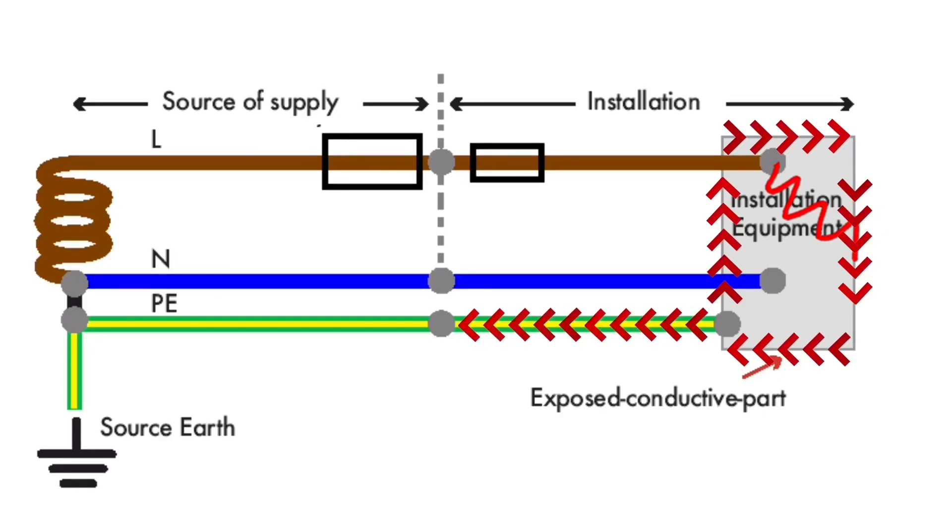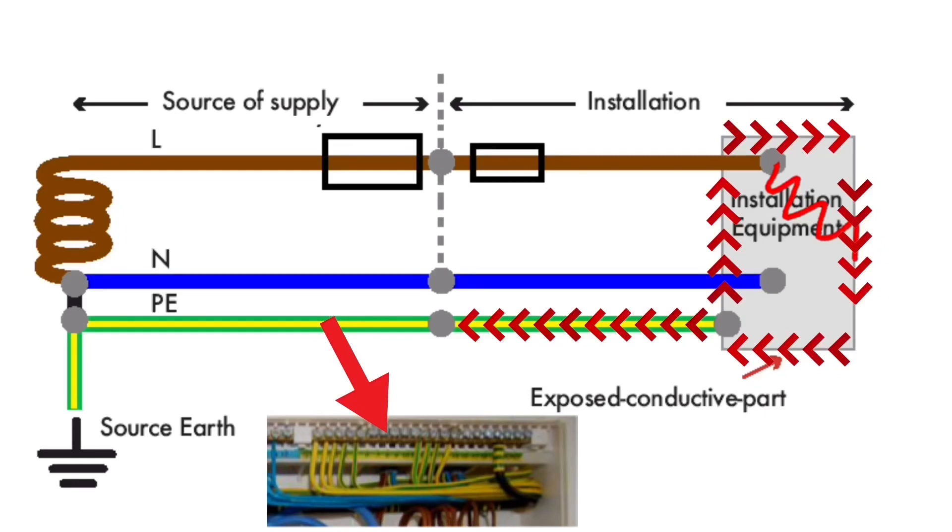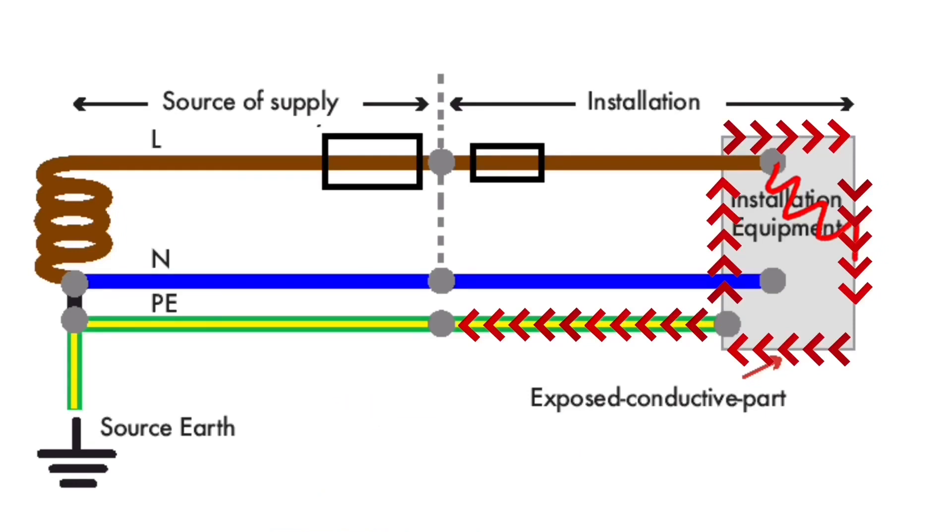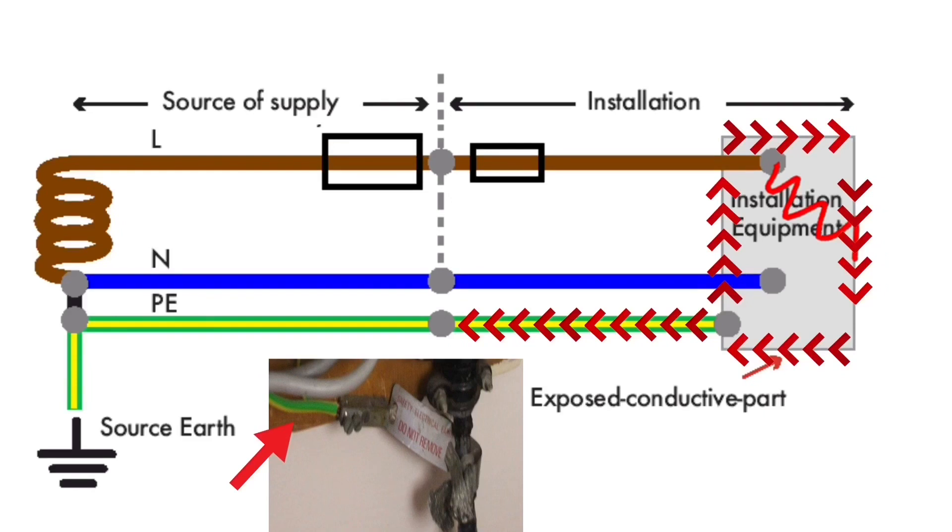This goes back to the earth terminal situated within the consumer unit which would become live. This is connected to the incoming earthing conductor which comes in with the meter tails. This earthing conductor becomes live.